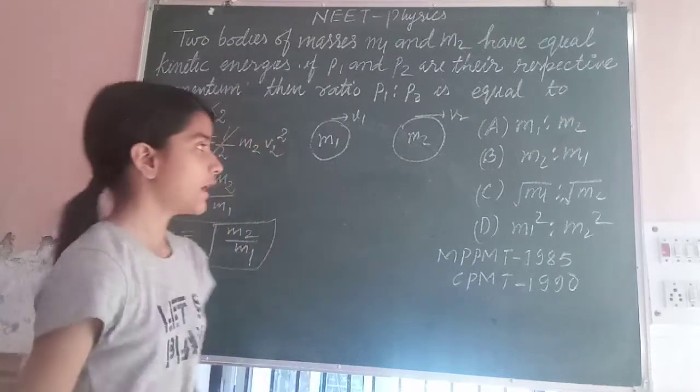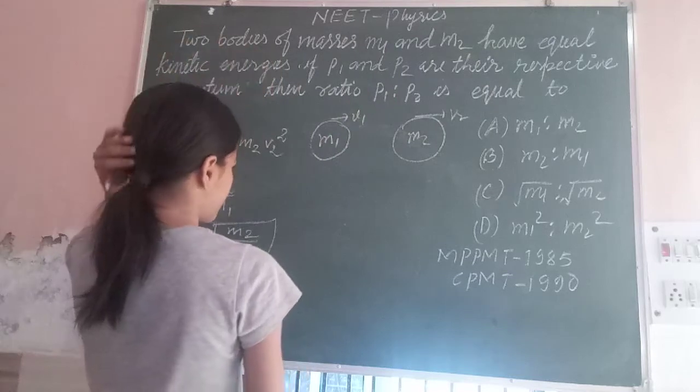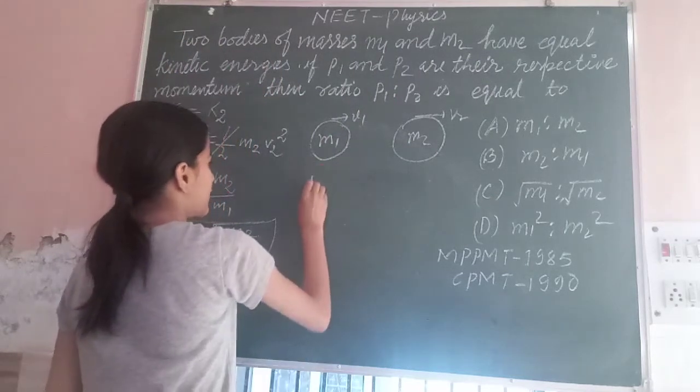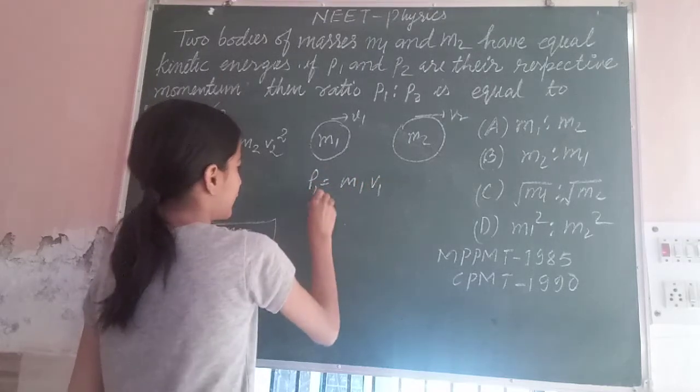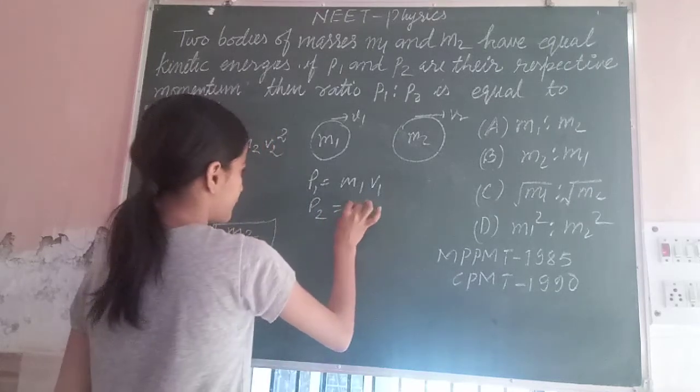Now, we will see that P1 ratio P2 is equal to. So, as we know P1 is equal to M1 V1, P2 is equal to M2 into V2.